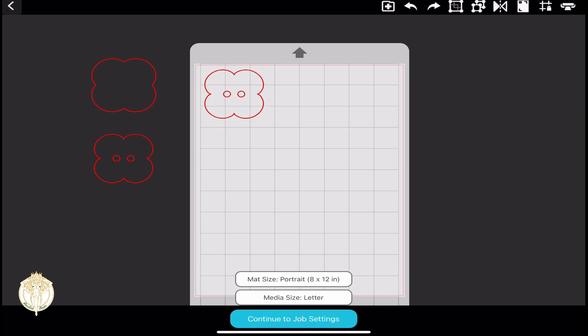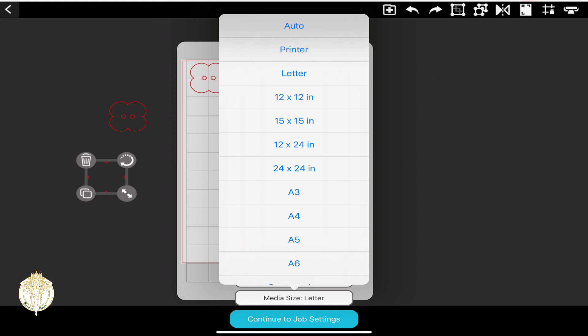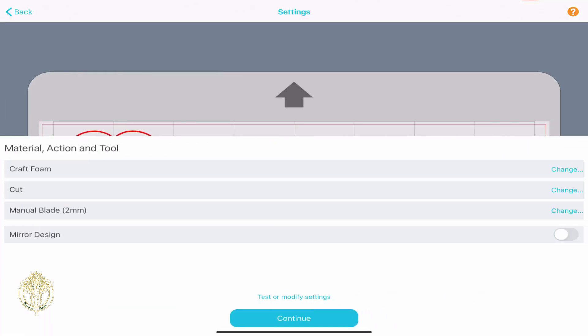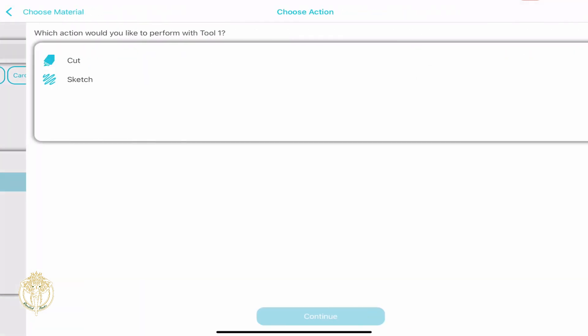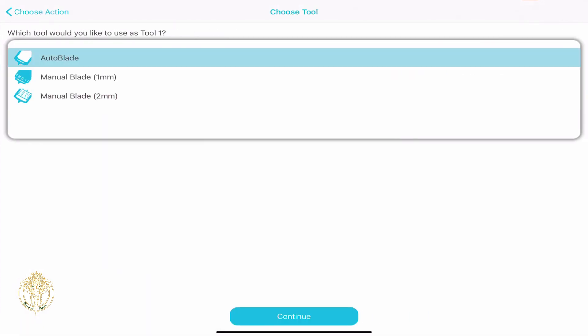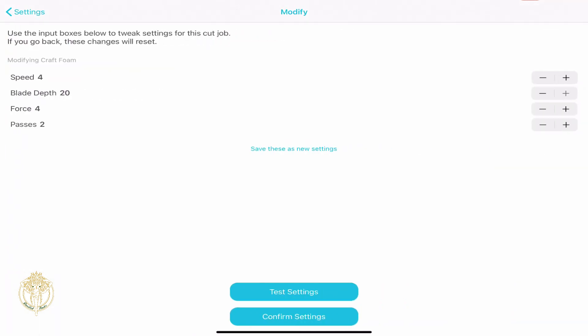You want to make sure your mat size is portrait, which is the 8 by 12. Your media size should be letter or whichever size it is, and then continue to your job settings. I'm choosing the material I'm working with - craft foam - so that is under Other in the drop down. The action I want this to perform is a cut and I am working with the manual blade two millimeter. You do have other options as you can see. Click continue and then go to test or modify settings at the bottom.